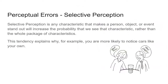There's also selective perception. All you women out there know that men have selective hearing — selective hearing is similar to selective perception, meaning we only perceive what we want to perceive. Selective perception makes a person, object, or event stand out, increasing the probability that we'll see that one characteristic rather than the whole package. Just like with the Mustang: if you have one, you notice everyone else's too.